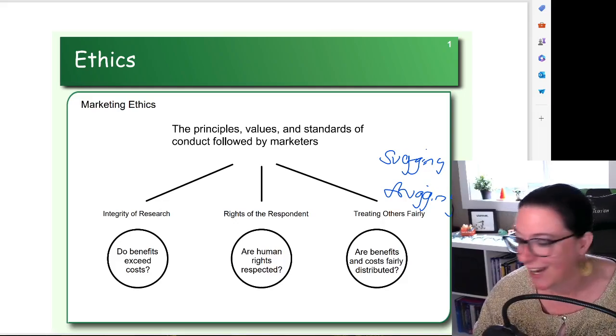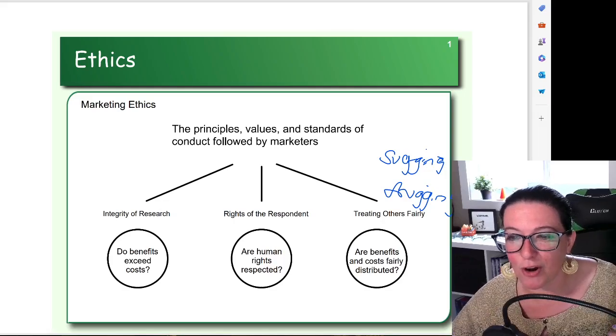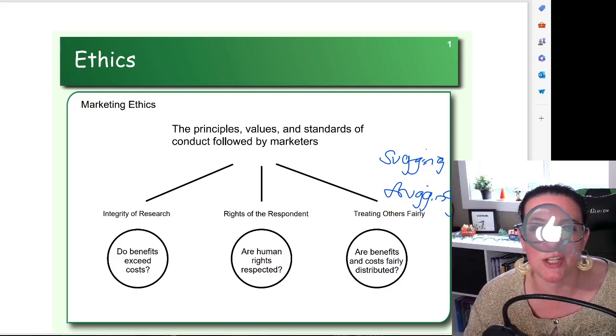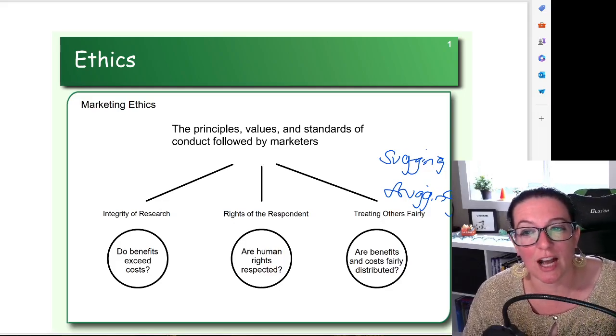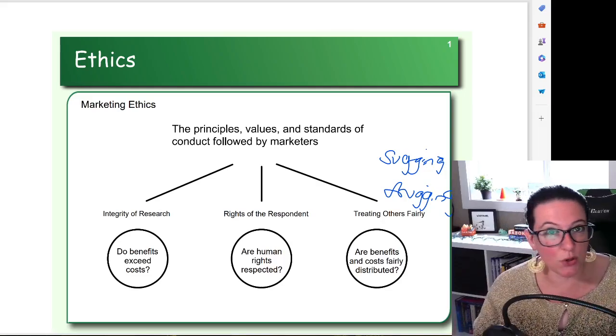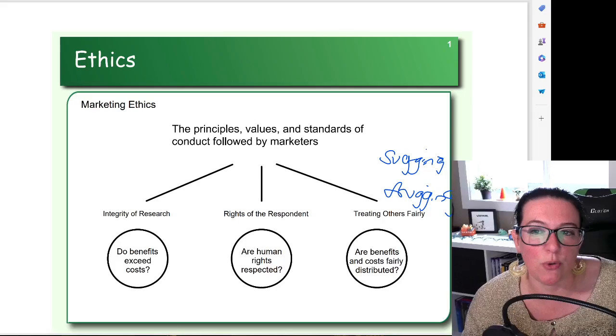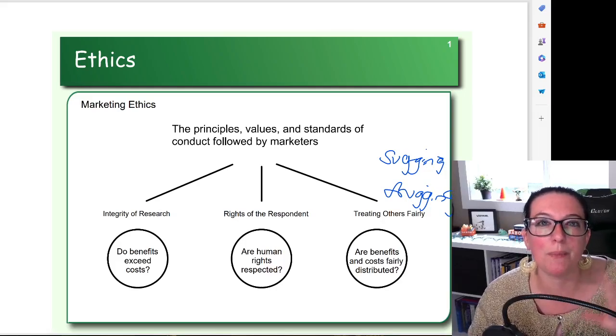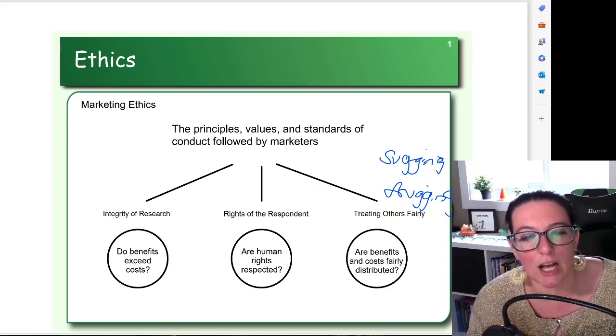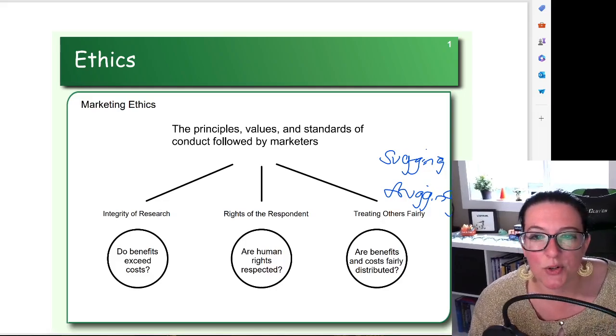Frugging - F-R-U-G-G-I-N-G - is fundraising under the guise of research. The idea here being you're telling people you're doing research for social change, to improve an organization, and instead it's just so you can collect information about people who might be willing to donate to you in the future. You're fundraising under the guise of research.